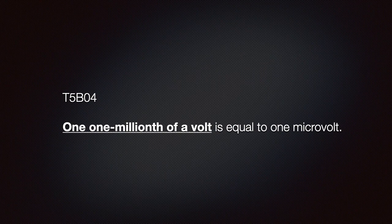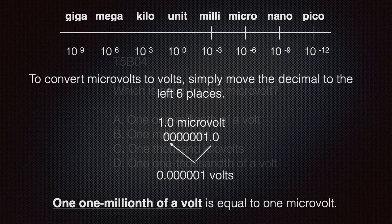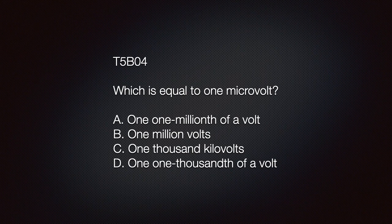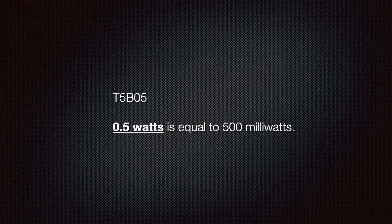We should know that one millionth of a volt is equal to a microvolt. To convert microvolts to volts, simply move the decimal to the left six places, adding zeroes as needed. The result is 0.000001 volts, or one millionth of a volt. On your exam you might see: which is equal to one microvolt? A) one millionth of a volt, B) one million volts, C) 1000 kilovolts, or D) one thousandth of a volt. The answer is A, one millionth of a volt.